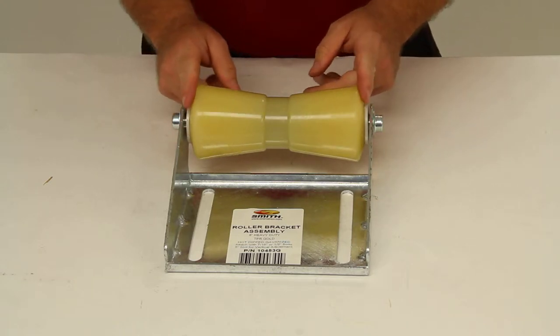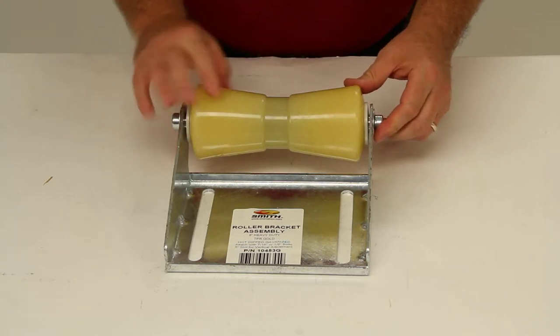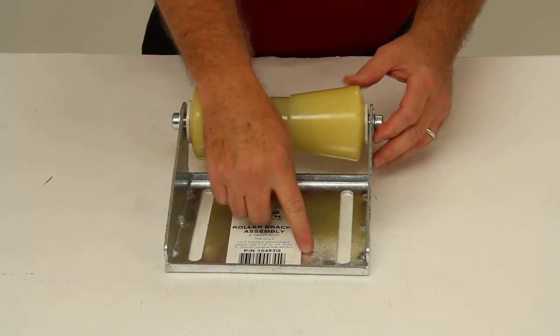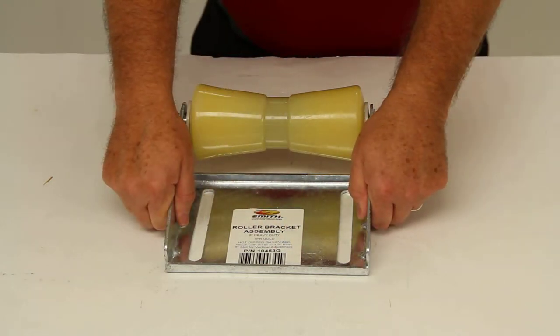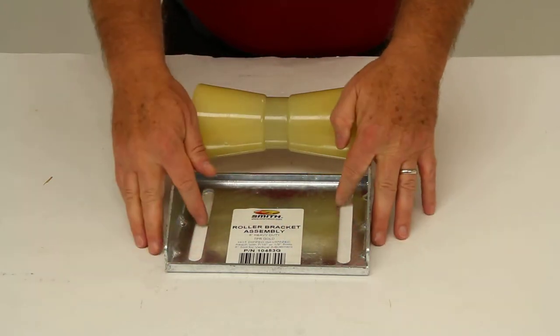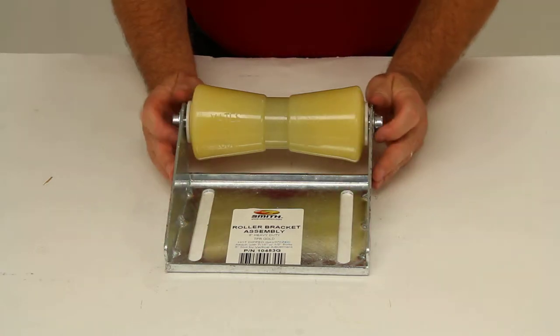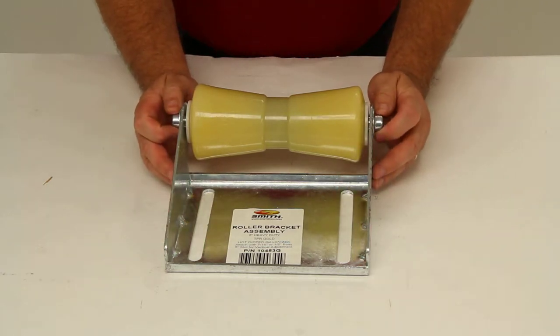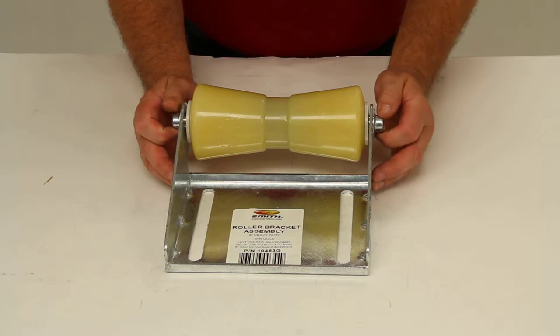Its 8-inch yellow thermoplastic rubber spool roller won't mark your boat, and the galvanized steel panel bracket has slotted mounting holes for adjustability. This is typically installed upright on the rear and middle cross members of a boat trailer.